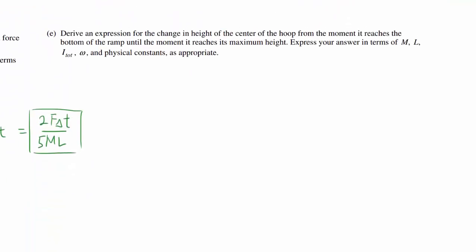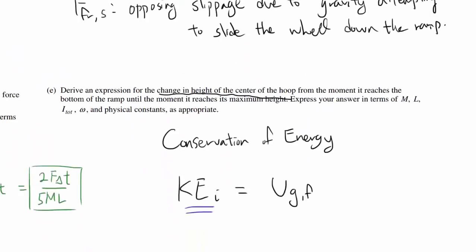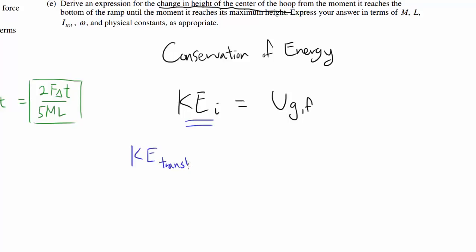Off to the final Part E — deriving an expression for the change in height of the center of the hoop. We have angular speed information, so this is clearly a conservation of energy problem. We're going from kinetic energy to gravitational potential energy — from the moment it reaches the base of the ramp until it reaches maximum height. The initial kinetic energy equals the final gravitational potential energy. Because we're rolling without slipping, there are two types of kinetic energy: translational (of the center of mass) and rotational.